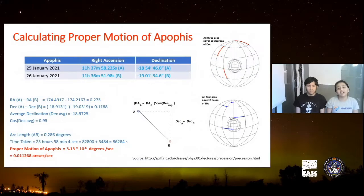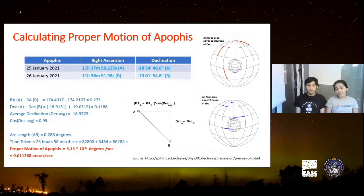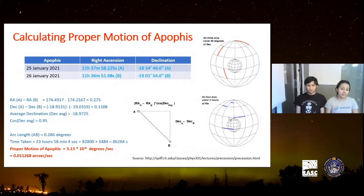Finding the change in declination was quite easy — I just subtracted the two values in arc minutes. But the right ascension was more difficult, because the distance between two right ascension coordinates actually changes depending on whether you're near the equator, where the distance is bigger, or near the poles, where it's much smaller. So I needed to use the declination as well to find the true right ascension distance. I found a formula where I multiplied the difference in right ascension by the cosine of the average of the two declination coordinates from each image. In total, the proper motion of Apophis was 3.13 × 10⁻⁶ degrees per second.